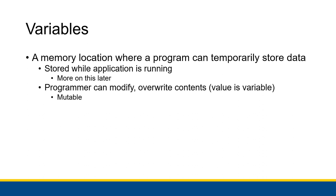When you tell the computer you need memory associated with the name dblRadius or dblArea, the computer will assign an address for a memory location to that name. This is where we get into variables. A variable is a type of memory location where a program can temporarily store data — it's stored while the application is running and goes away when the application stops. The important thing about variables is that you can store values in them but then modify that value — you can overwrite its contents. The value of it is variable, and we call this a mutable memory location. In Visual Basic, variables are always mutable — you can always change what's inside of them.